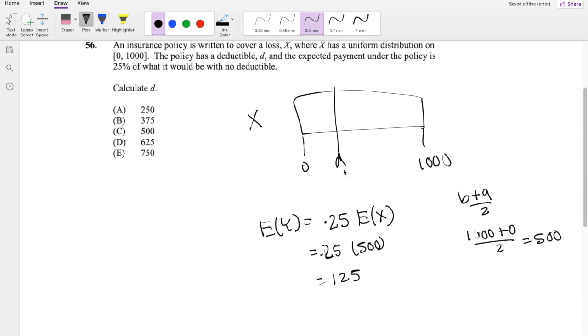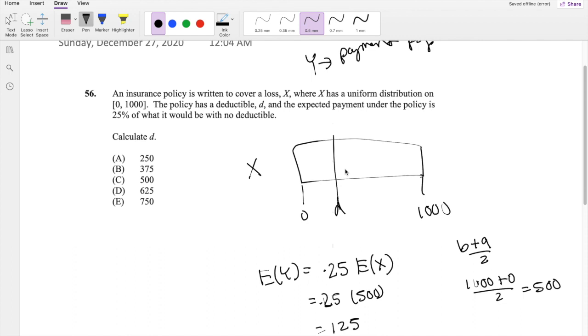And the expected payment of Y would be, so let's think of this from a point of view of the customer, because this policy is for me. So as a customer, if the loss is under D, I pay $0. So expectation is just 0 times anything, which is 0.